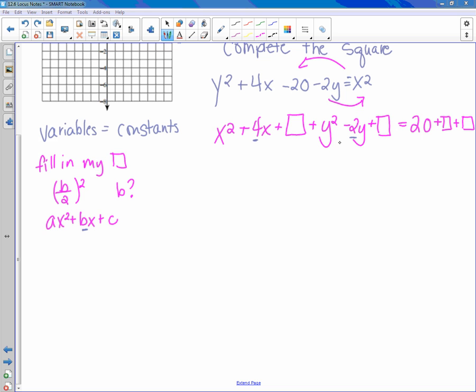Watch me go through this first one. Now that I have b as 4, if I say b divided by 2, 4 divided by 2 is 2, and if I square it, it becomes 4. So 4 goes there. Now, since I put 4 here, what do I have to do over here? I have to put 4 there too.